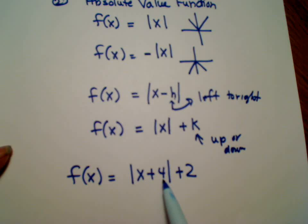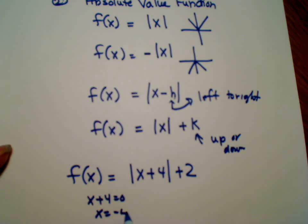But I also know because I have the 4, it's going to shift left to right. And this is telling me it's going to go up or down. So first let's take care of the shifting from left to right. I'm going to take the x plus 4 and set it equal to 0. So x plus 4 is equal to 0. x is equal to a negative 4.